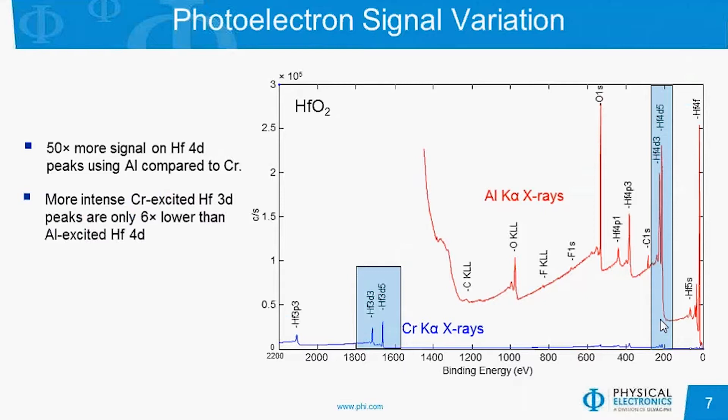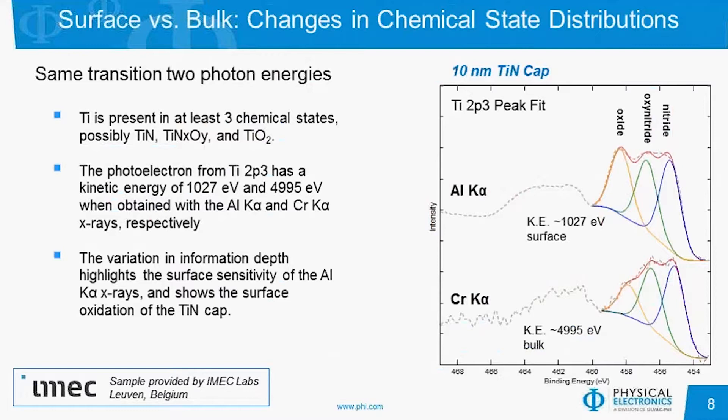Using both X-ray sources, or two transitions with very different binding energies, we can use differences in photoelectron kinetic energies to look at surface versus bulk properties of a sample. In this example, I'm looking at the surface oxidation of a titanium-nitride cap from a sample provided by IMEC. The titanium 2P transition was collected with both X-ray sources, and in both cases we observe at least three chemical states corresponding to titanium nitride, titanium oxynitride, and titanium oxide.